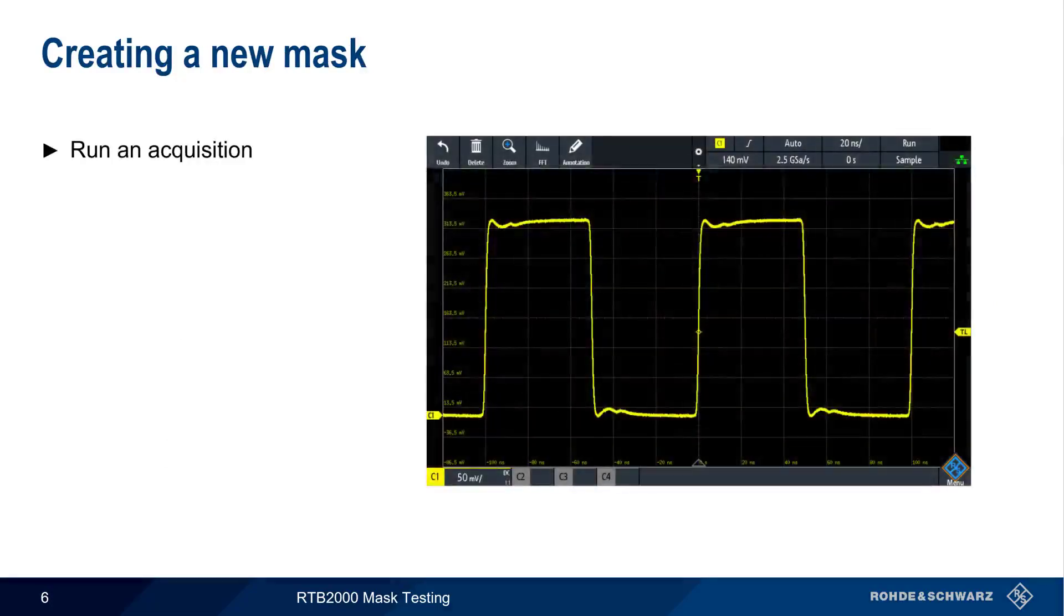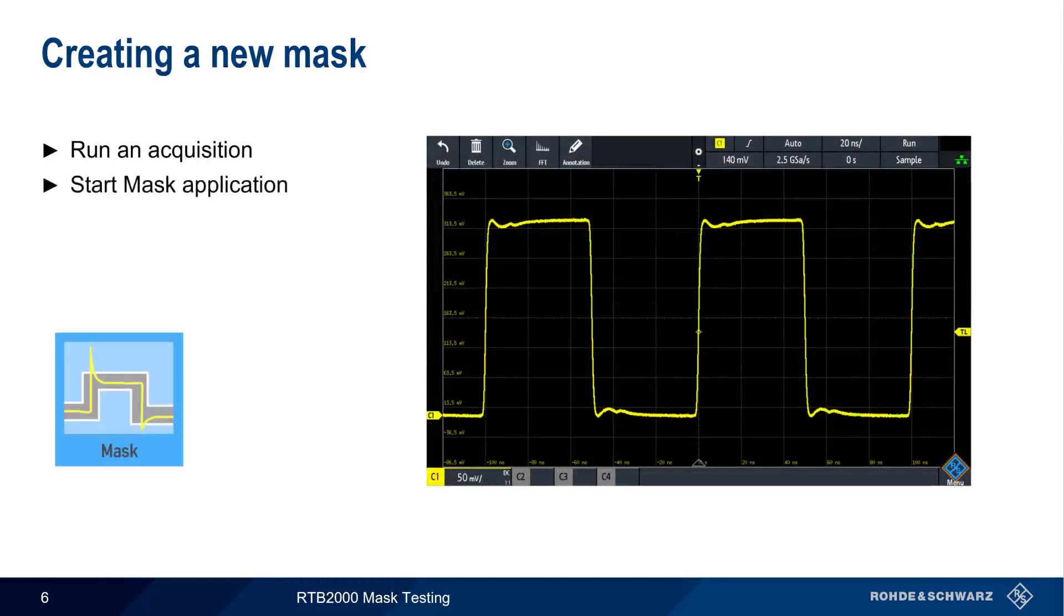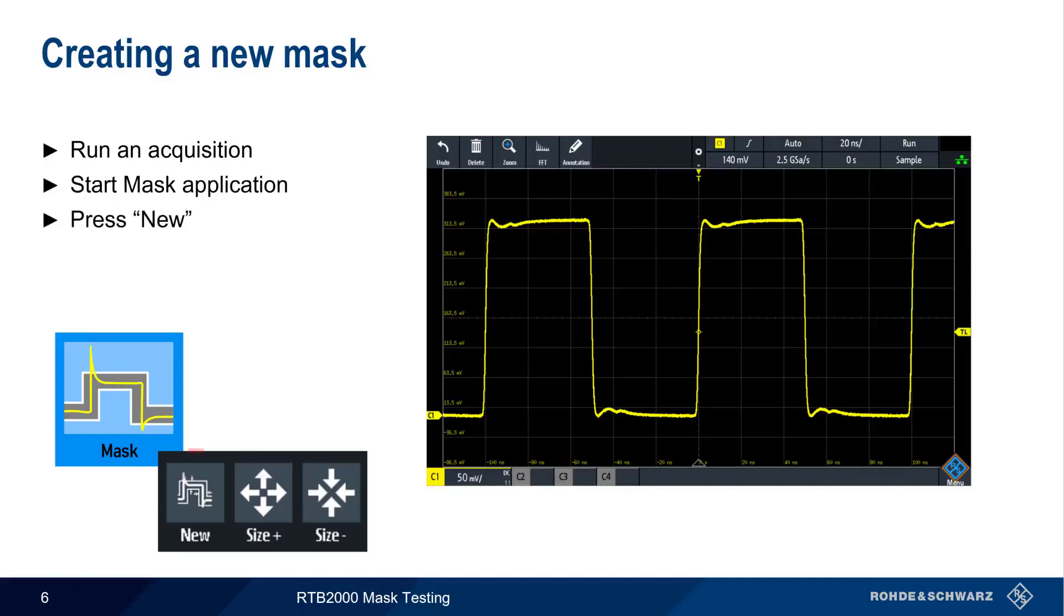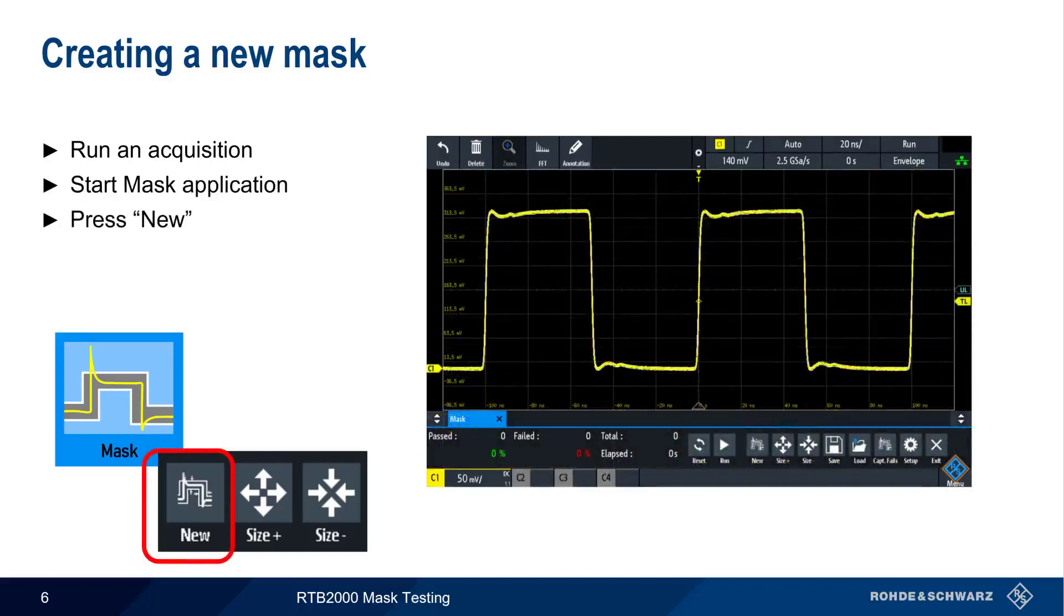Let's start with creating a new mask. Masks are created from acquired waveforms, so the first thing we need to do is start an acquisition. The next step is to start the mask application and press New. A relatively tight mask will then be created around the acquired waveform. This may be difficult to see unless you zoom in or look very closely.